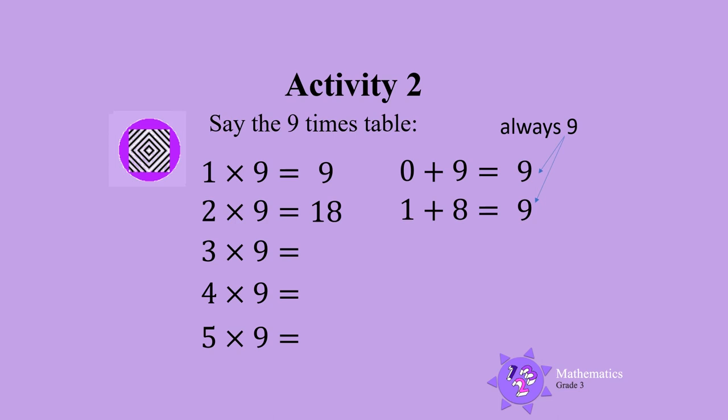Let's repeat this with more of the Nine Times Table. Now, add the digits in the answer: 2 plus 7 is 9, 3 plus 6 is 9, 4 plus 5 is also 9. When we add the digits in the answer, we always get 9.